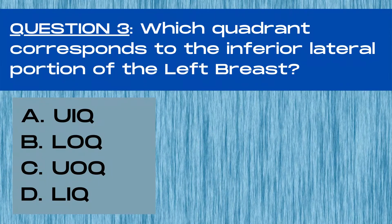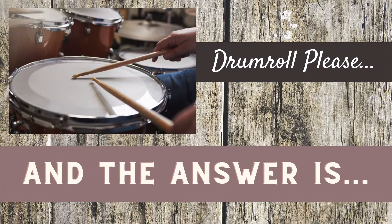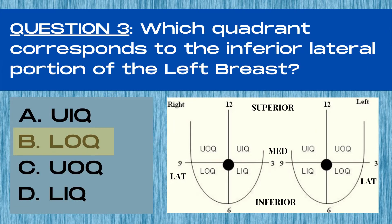Question 3. Which quadrant corresponds to the inferior lateral portion of the left breast? A upper inner quadrant, B lower outer quadrant, C upper outer quadrant, or D lower inner quadrant? The answer is B, lower outer quadrant. In the left breast, the inferior lateral portion of the breast corresponds to the lower outer quadrant.